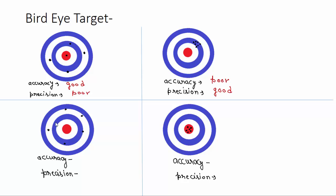In the third set, all dots are very far from each other and no dot is inside or close to the red circle, so both accuracy and precision are poor. In the fourth set, all dots are inside the red circle — very close to the target or actual value — so accuracy is good. They are also very similar and close to each other, so precision is also good.